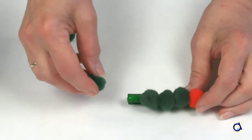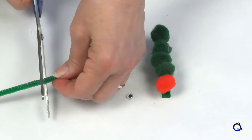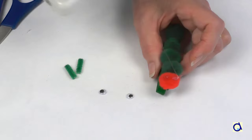Then take a pipe cleaner and cut two small pieces to represent the antennas. Put two dots of hot glue on the head and glue the pieces of pipe cleaner in place.